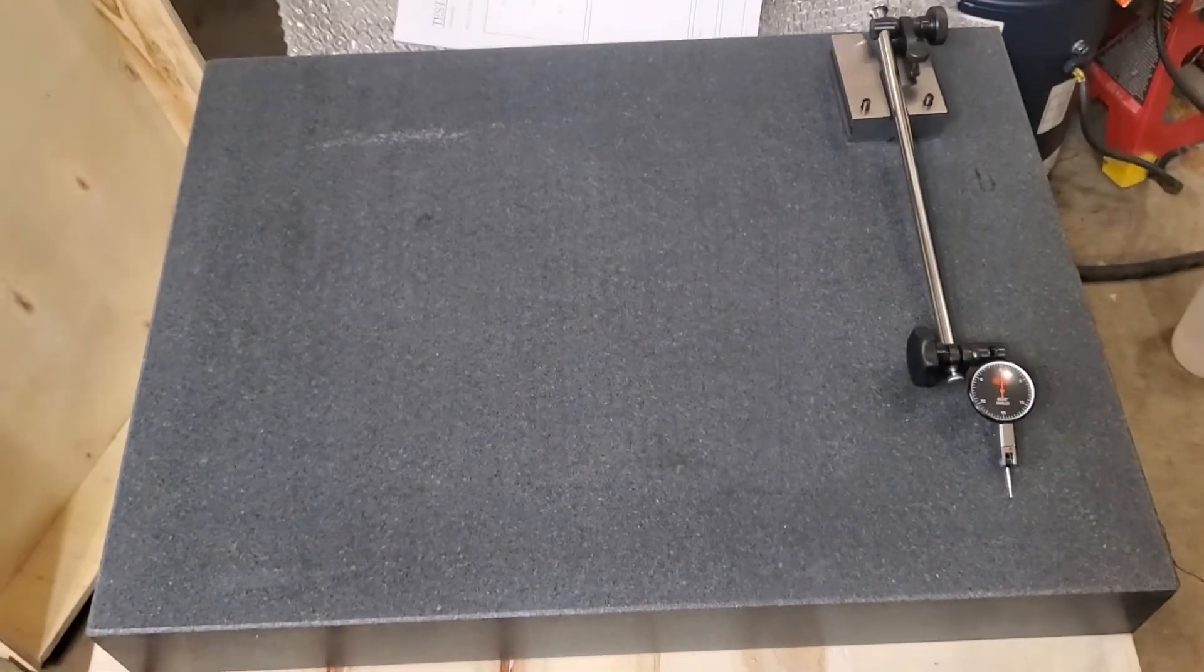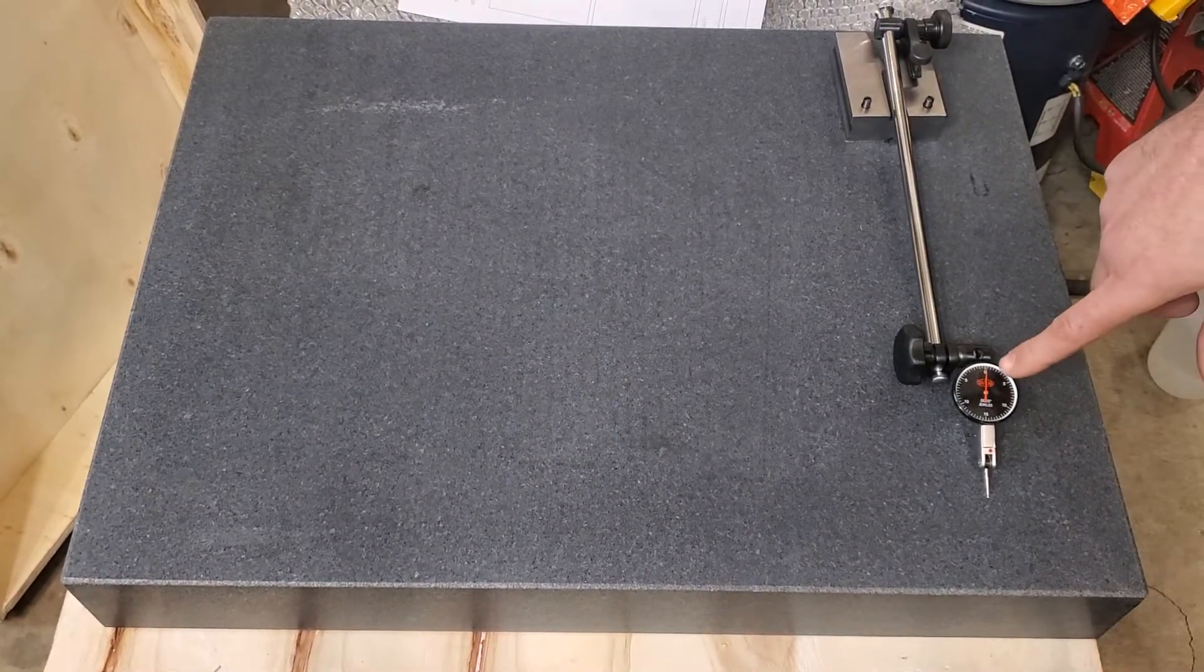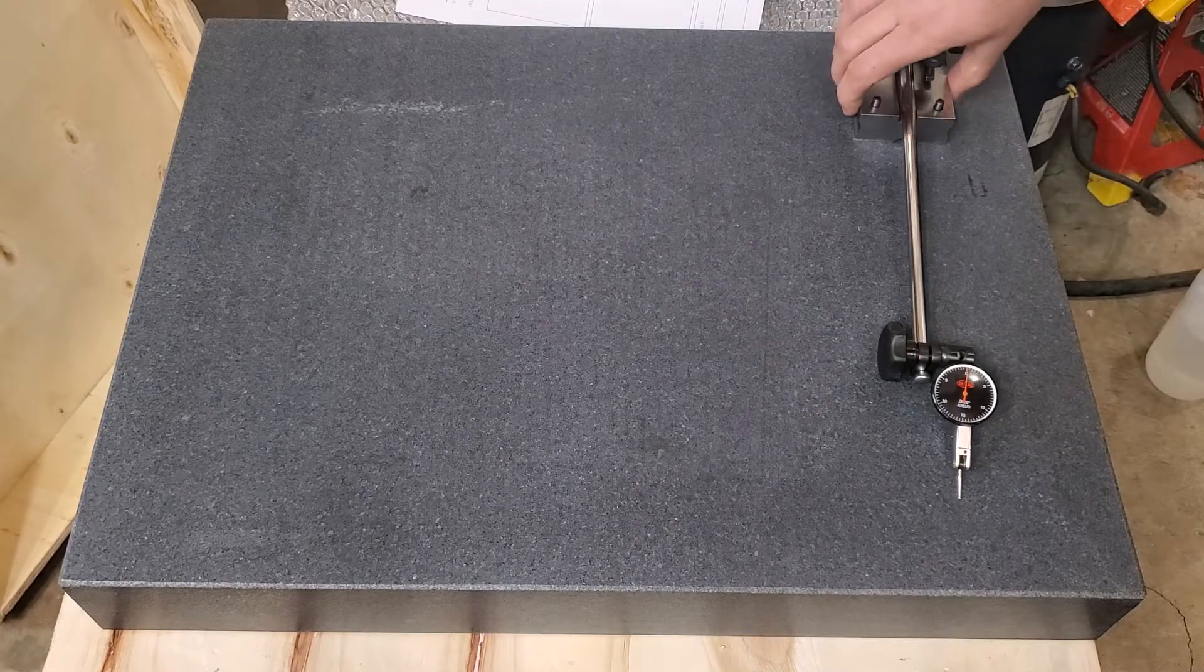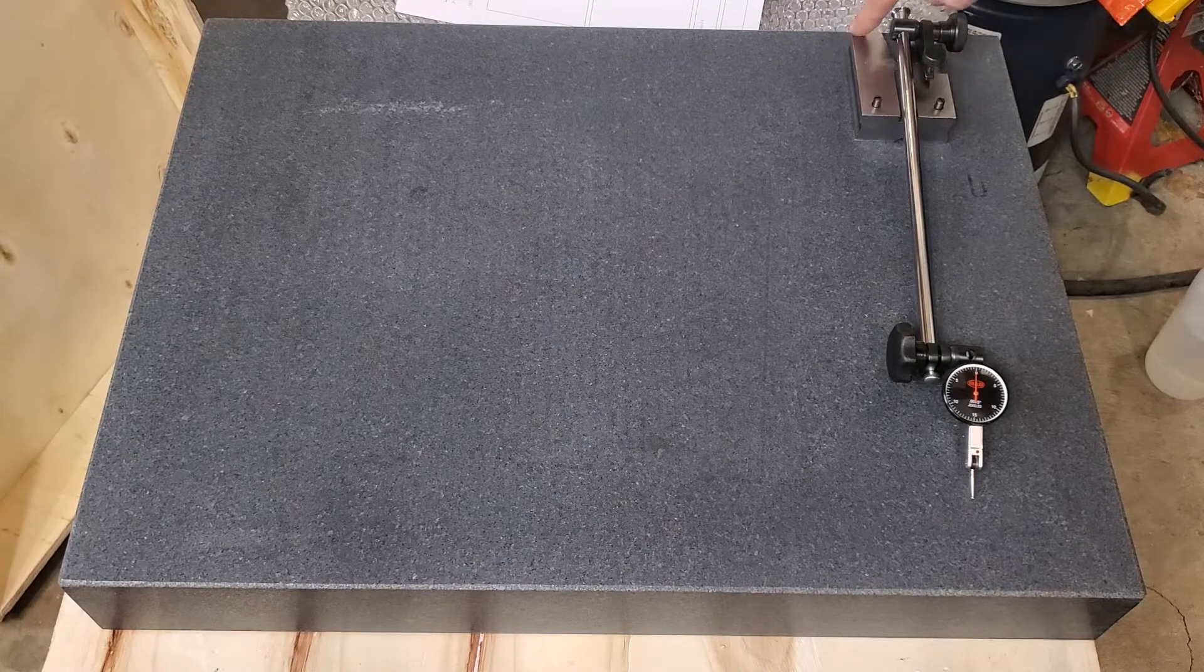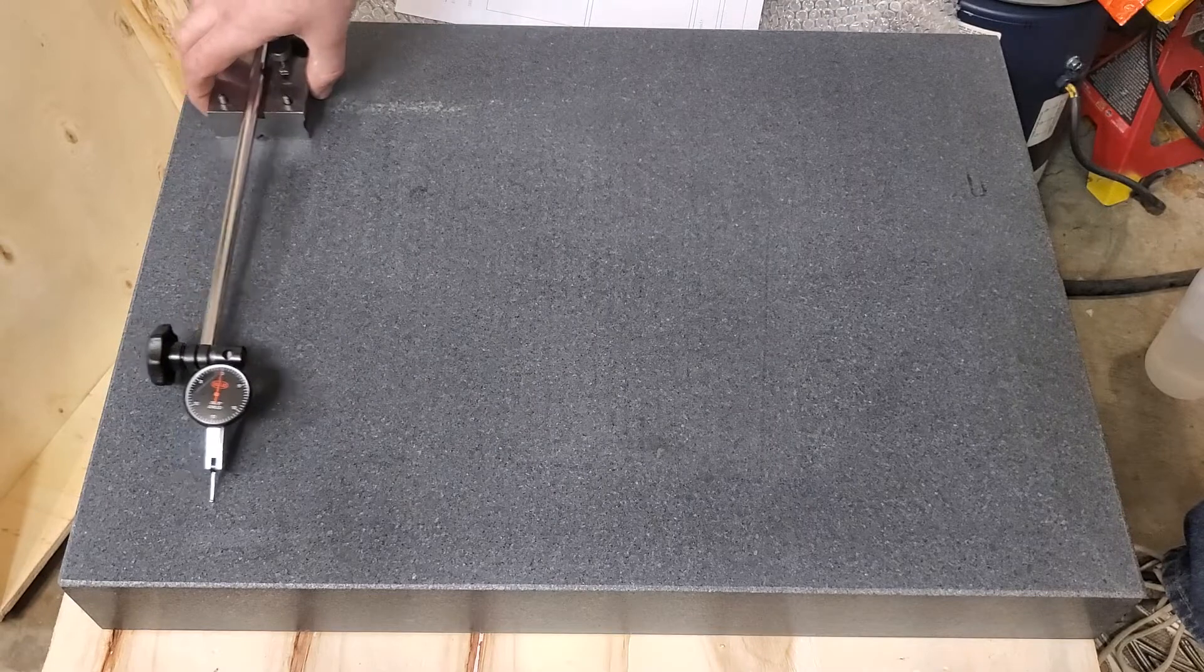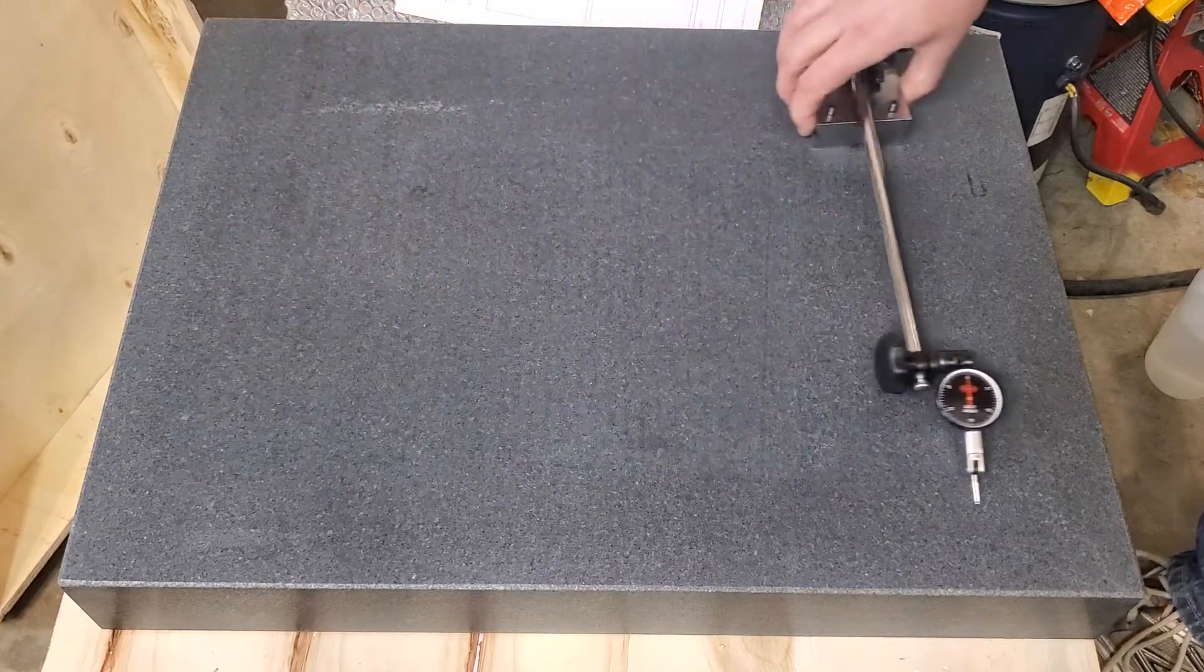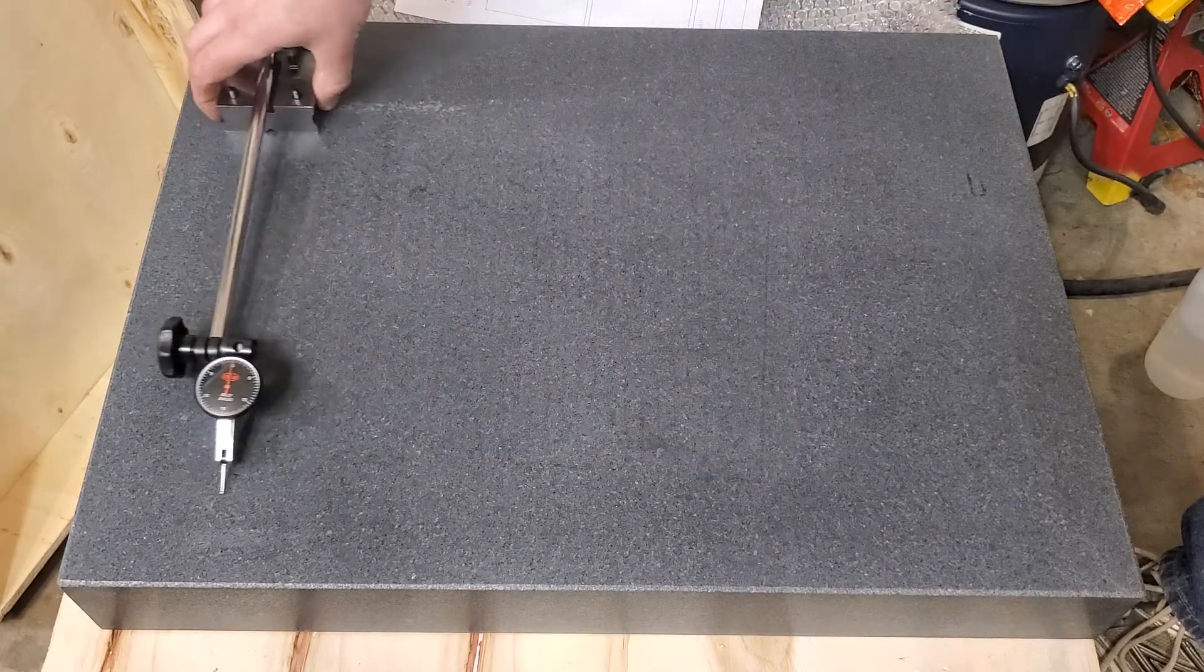The good news is it does seem to be flat, which is really its only job. This is a half-thousandth indicator, and I've got it set up on about 16 inches extension from this surface gauge, which also isn't very good by the way. If I press on this plate I can get about a half a plate movement, but if I very carefully just drag this side to side, that needle almost doesn't move at all, so it's really beyond my ability to measure flatness. I can see it moving maybe a tenth or something along those lines.